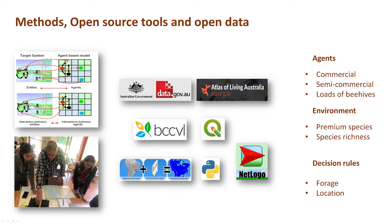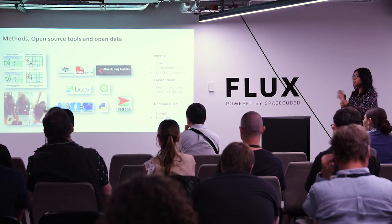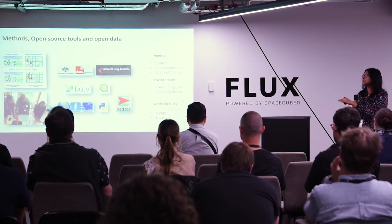In terms of methods, in an agent-based model we have three elements: an agent, which can be a human, animal, organization, company, or institution; the environment, which can be spatial or a network environment; and a set of decision or interaction rules by which agents interact with each other or with the environment. One major use of agent-based models is that they can incorporate local-level interactions and explain how system-level results emerge from those local interactions — which is exactly what we want to see for beekeepers' interactions with forage locations.